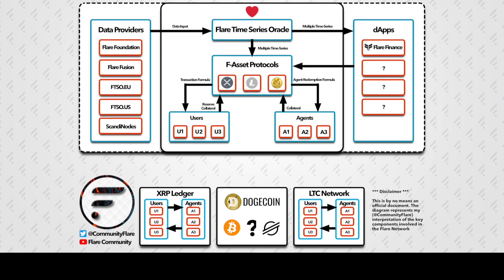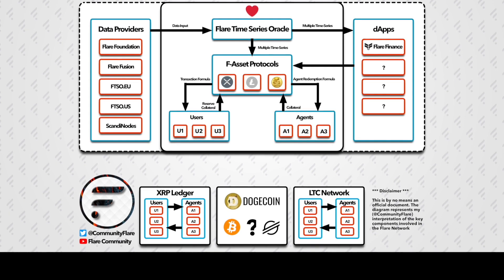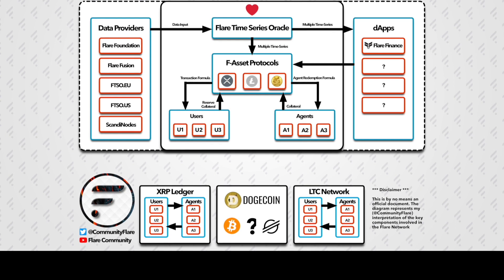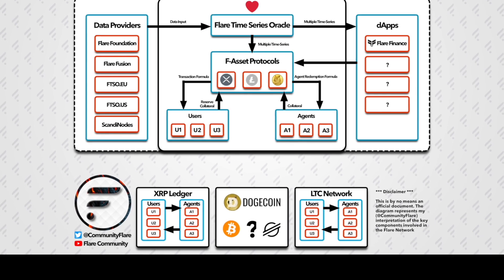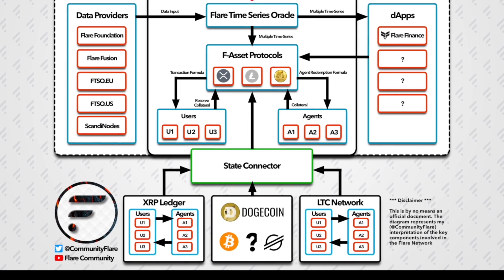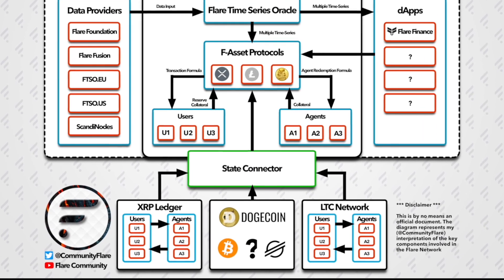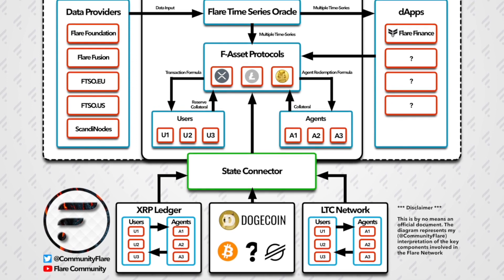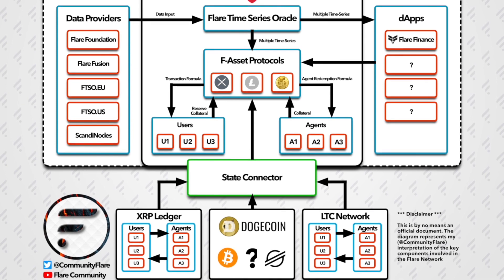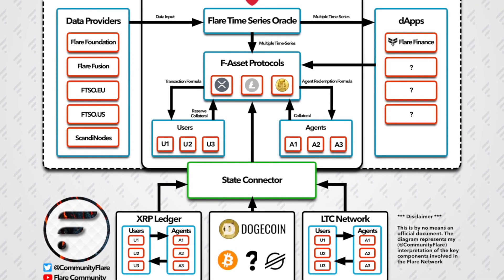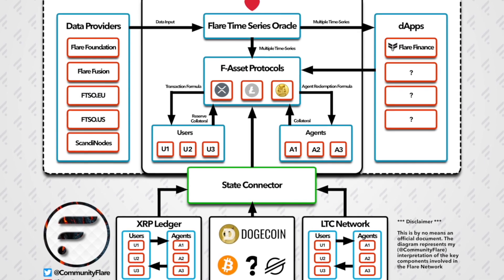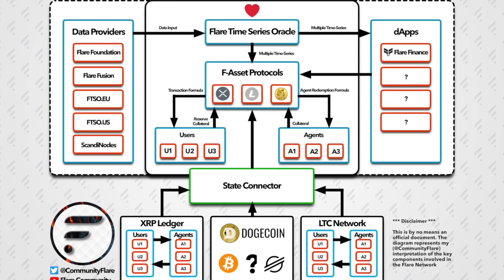But how does the Flare Network, and more specifically the F-Protocols, monitor the movement of assets which are to be minted or redeemed? The State Connector is somewhat of a ledger monitor, observing if assets have been sent to the various F-systems and also monitoring the assets that have been redeemed to their users correctly.